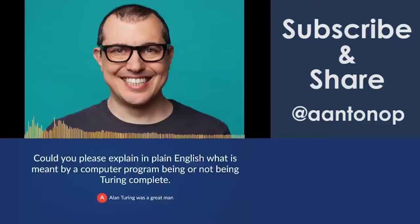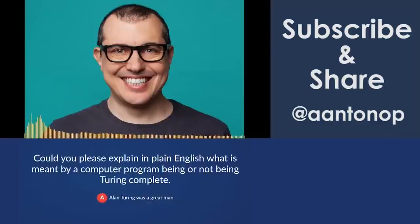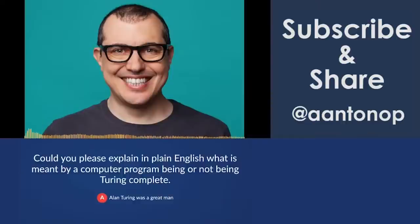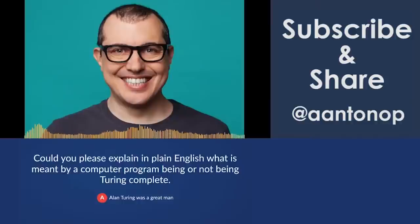A Turing incomplete program is a program that is simple enough — it doesn't have loops, doesn't have recursion — so you know how long it's going to take to run. You know all of the possible conditions it will run under and when it's going to terminate. You can actually prove it algorithmically and prove that it's going to run for a specific length of time, which makes it a lot simpler and more manageable.